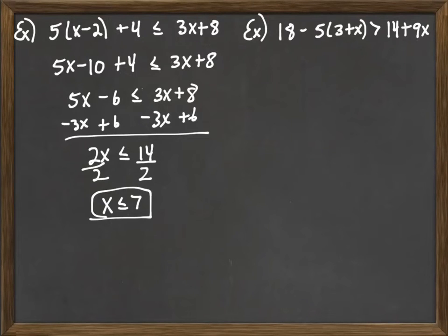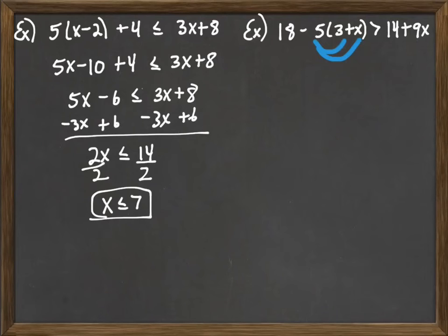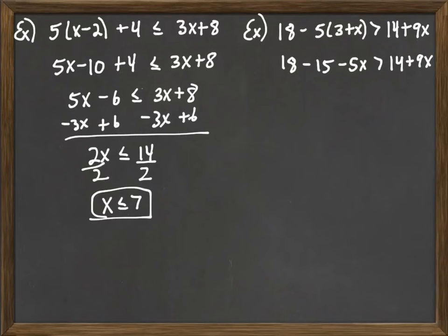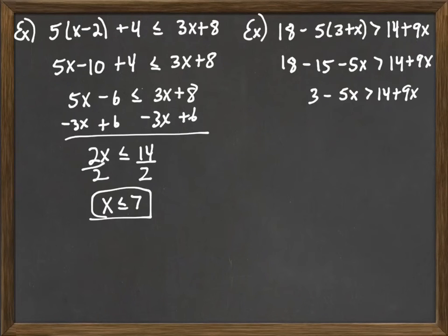Let's move on to a second example: 18 minus 5 times the quantity (3 plus x) greater than 14 plus 9x. We want to solve, so we have some simplifying to do. We need to distribute the minus 5 through the parentheses — minus 5 times 3 gives us negative 15, and minus 5 times x gives us minus 5x. The other side stays as is. Then we combine like terms: 18 minus 15 becomes 3, giving us 3 minus 5x greater than 14 plus 9x.